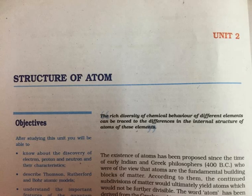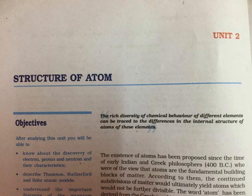On the basis of the observations, Rutherford drew the following conclusions regarding the structure of atom: (1) Most of the space in the atom is empty, as most of the alpha particles passed through the foil undeflected. (2) A few positively charged alpha particles were deflected — the deflection must be due to enormous repulsive force showing that the positive charge of the atom is not spread throughout the atom as Thomson had presumed. (3) The positive charge has to be concentrated in a very small volume that repelled and deflected the positively charged alpha particles. Calculations show that the volume occupied by the nucleus is negligibly small compared to the total volume of the atom. The radius of the atom is about 10⁻¹⁰ m while that of the nucleus is 10⁻¹⁵ m. To appreciate this difference: if a cricket ball represents a nucleus, then the radius of the atom would be about 5 km.